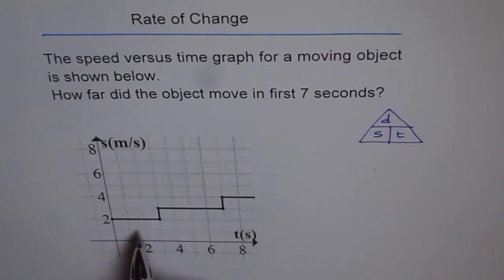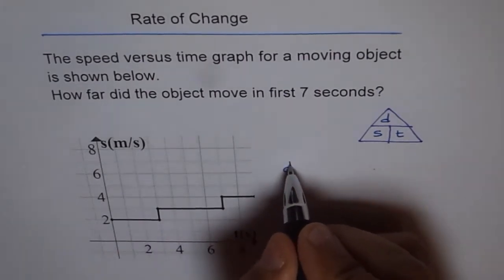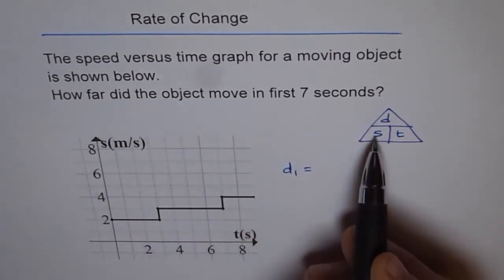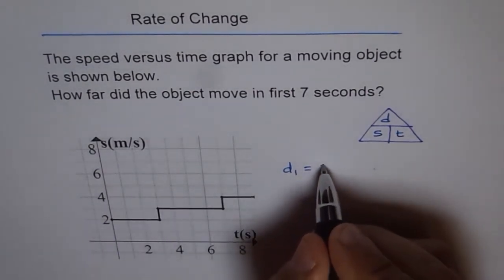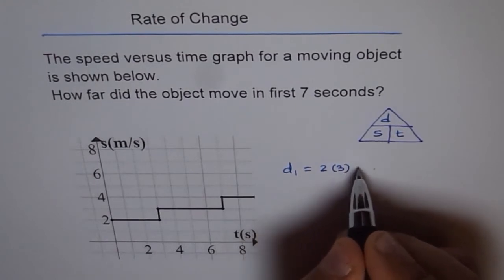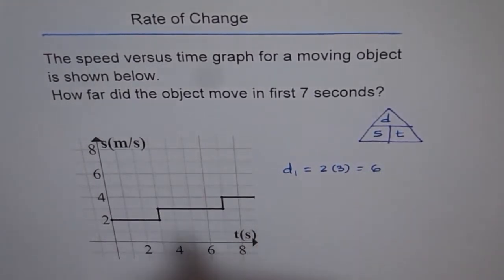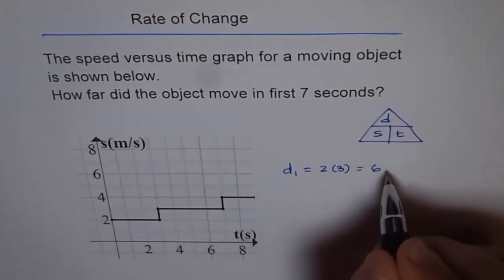So for the distance, I'll call this distance as D1. Distance D1 will be speed into time. Speed is two and time is three. So we'll say two times three, which is six meters per second divided by seconds will give us meters.